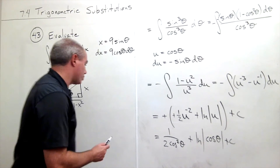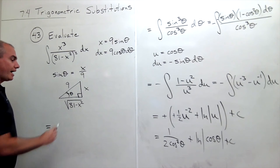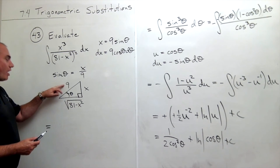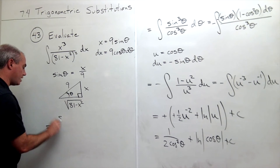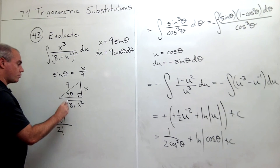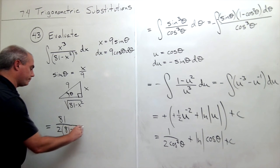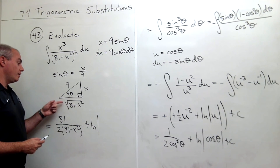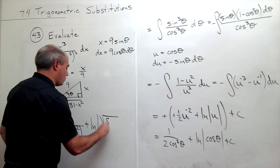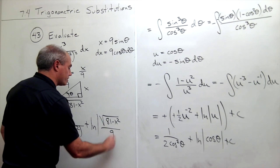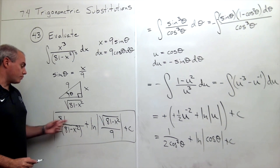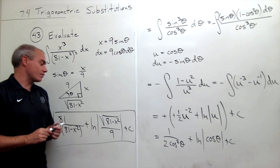Substituting back: 1 over cosine squared theta becomes the hypotenuse squared over the adjacent squared, which is 81 over 2 times (81 minus x squared). For the logarithm term, cosine theta is square root of 81 minus x squared over 9. So the final answer is 81 halves times 1 over (81 minus x squared) plus ln of the absolute value of square root of 81 minus x squared over 9, plus C.